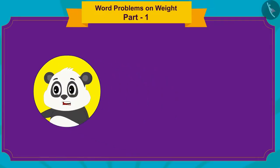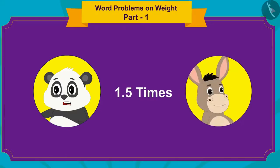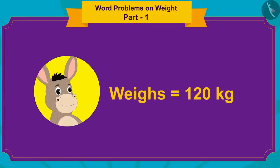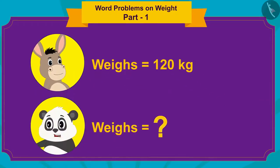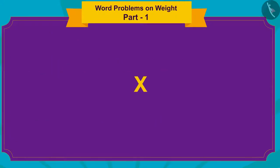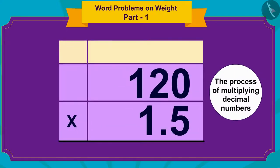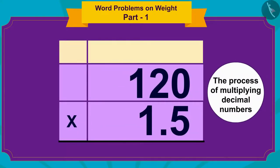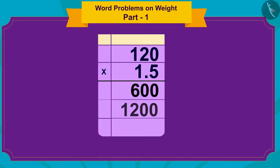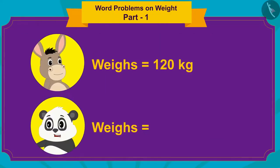Gholu's weight is one and a half times Bholu's weight, and Bholu weighs 120 kilograms. So to find Gholu's weight, we have to multiply Bholu's weight by 3/2 or 1.5. Do you remember the process of multiplying decimal numbers that we learned? Let us do this multiplication quickly. Gholu weighs 180 kilograms.